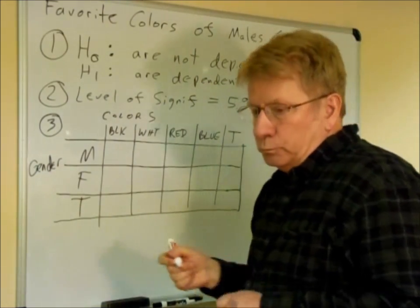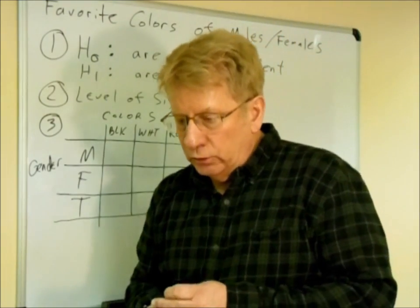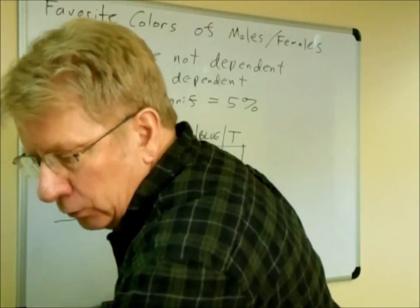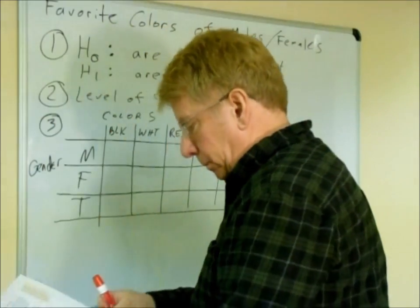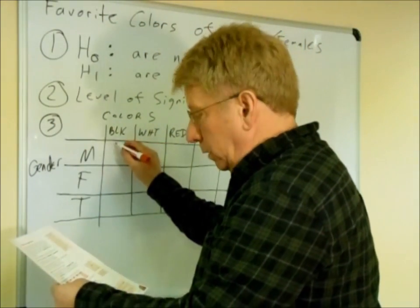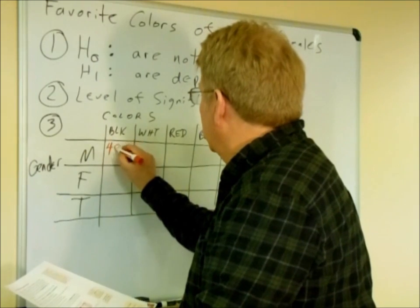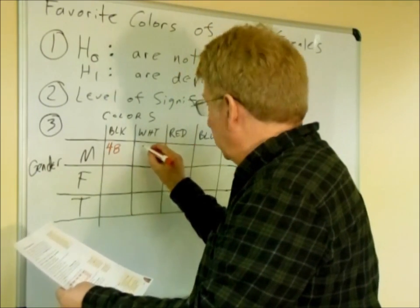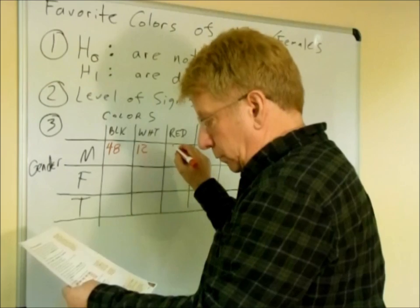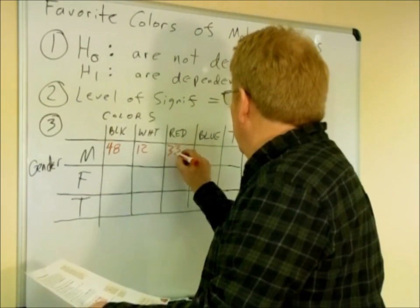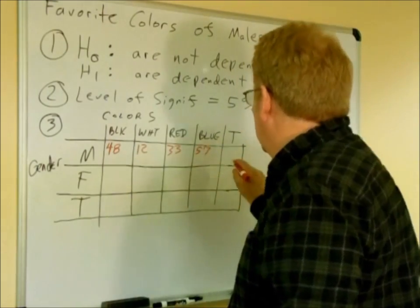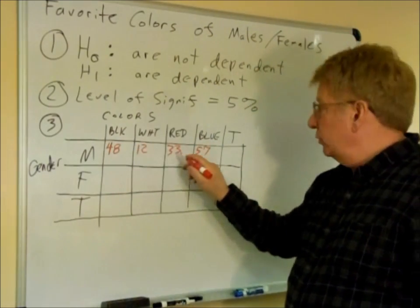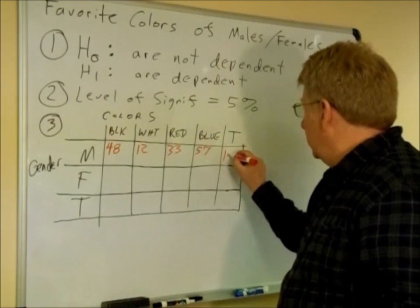So in this example, we're going to use this data. We'll have male, 48 prefer black, 12 white, 33 red, and 57 blue. And then the total we add up across this row, and the total is 150.